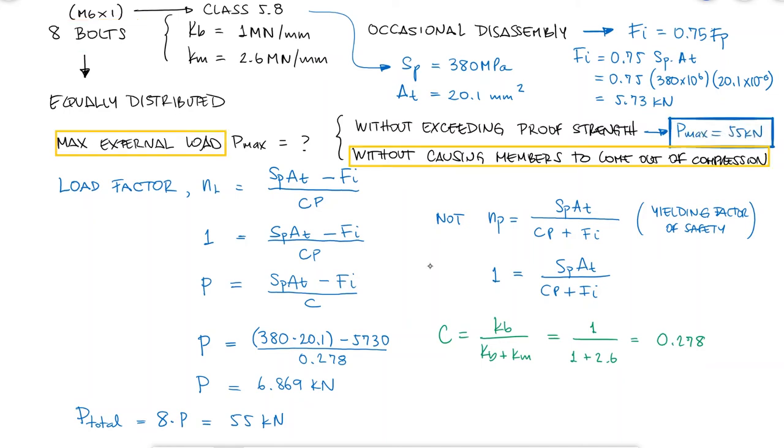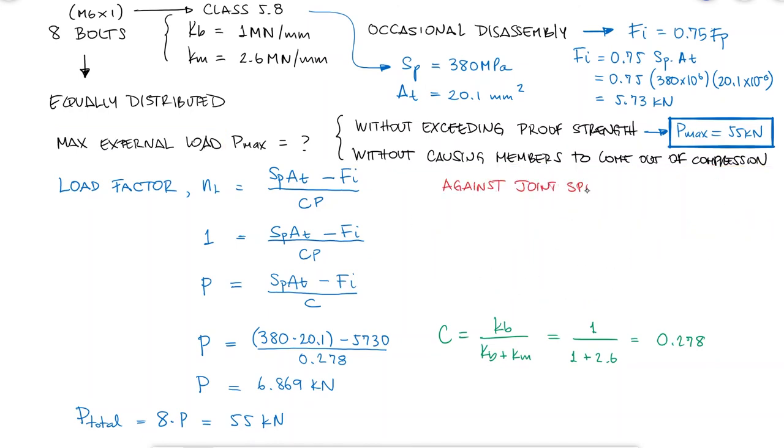To find the maximum external load without causing members to come out of compression, we'll use a factor of safety against joint separation equal to 1.